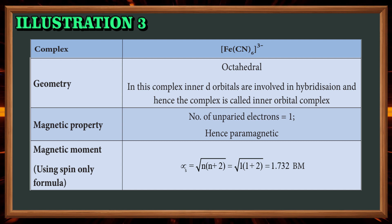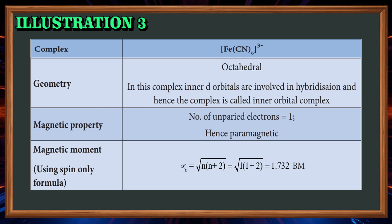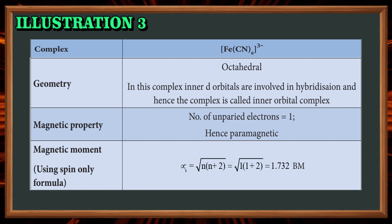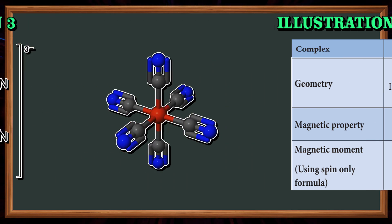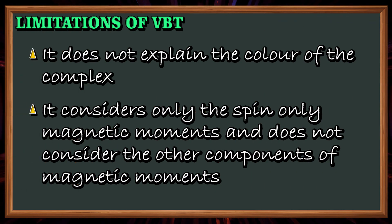The magnetic property: this complex has one unpaired electron, so it is paramagnetic. The magnetic moment μs = √(n(n+2)), with n = 1, giving μs = 1.732 BM.